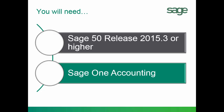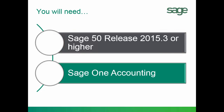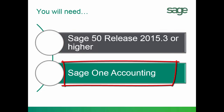Before we start, please make sure that your Sage 50 Accounting is running version 2015.3 or higher. To find out your current version, open Sage 50, go to the Help menu, and then click About Sage 50. You will also need an active Sage 1 Accounting subscription.